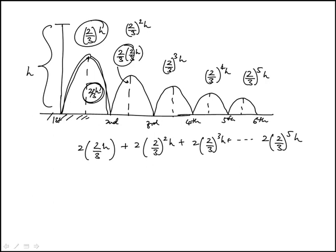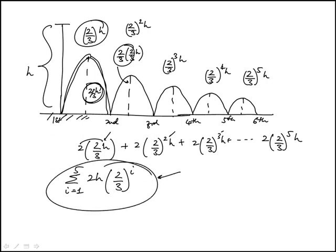So that's what we're looking for. We just have to write in the summation notation. We notice we can just take out two h outside and notice that the two-thirds power goes from one, two, three, four, five. So to the power of i summation where i goes from one to five. And this is the same as answer choice A.